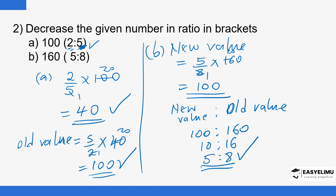The formula for finding this ratio is essentially the same as for increasing ratios. To arrive at the new value, take the first number of the ratio divided by the second, and multiply by the old value. To find the old value given the new, use 8 over 5 times the new value — 8 over 5 times 100 — and you'll arrive back at 160.